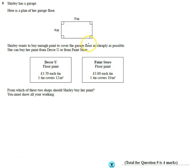She wants enough paint to cover the garage floor as cheaply as possible. She can buy paint from two choices, she can go with Decor U, she can go with Paint Store, and we've got different prices and the tins cover different amounts. Which of these two should she buy?